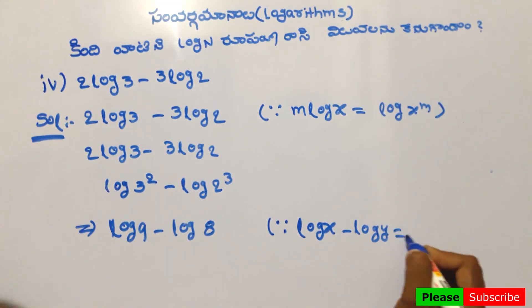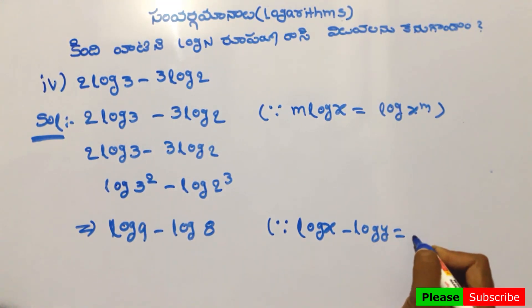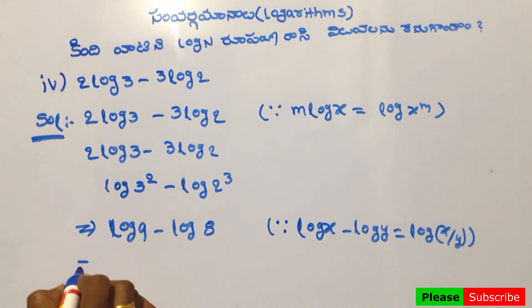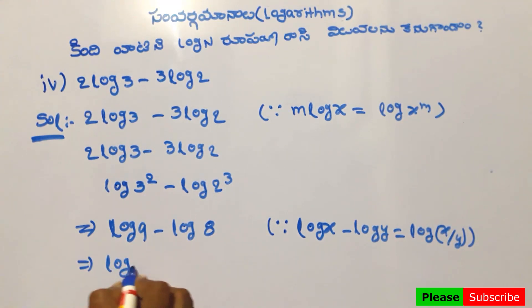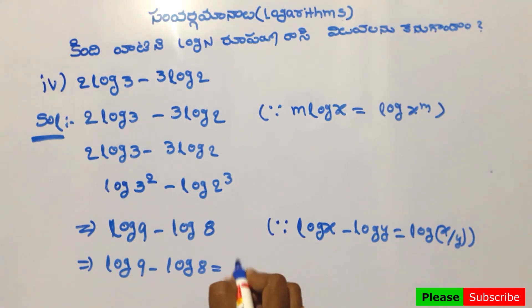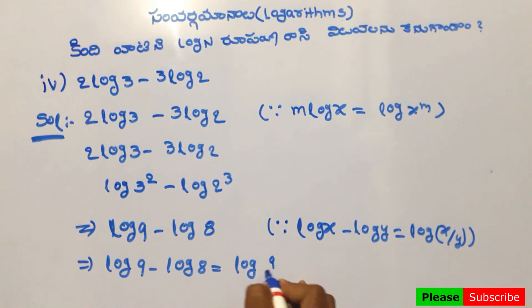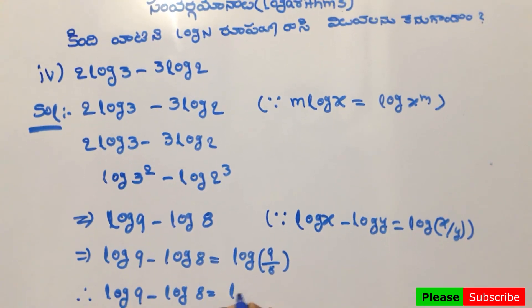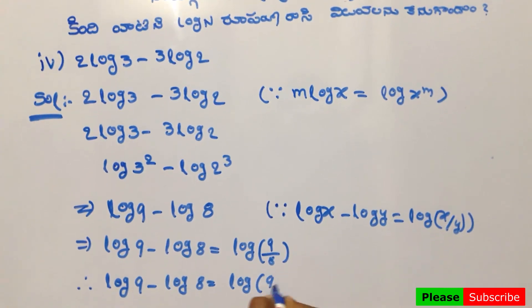Using the formula: log x minus log y equals log x by y. Therefore, log 9 minus log 8 equals log 9 by 8.